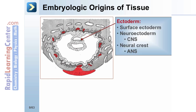The ectoderm is comprised of the surface ectoderm, which gives rise to the adenohypophysis and forms the epidermis and epithelial linings of the skin, ear, nose, and eye. It also is comprised of neuroectoderm, which gives rise to the neurohypophysis and forms the CNS neurons, astrocytes, oligodendrocytes, ependymal cells, and pineal gland.